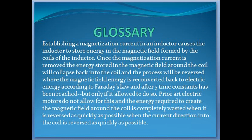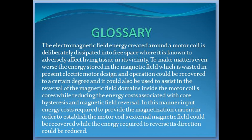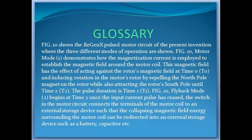Prior art electric motors do not allow for this, and the energy required to create the magnetic field around the coil is completely wasted when the current direction is reversed as quickly as possible. The electromagnetic field energy created around a motor coil is deliberately dissipated into free space, where it is known to adversely affect living tissue in its vicinity. To make matters even worse, the energy stored in the magnetic field which is wasted in present electric motor design and operation could be recovered to a certain degree, and it could also be used to assist in the reversal of the magnetic field domains inside the motor coil's cores while reducing the energy costs associated with core hysteresis and magnetic field reversal. In this manner, input energy costs required to provide the magnetization current could be recovered while the energy required to reverse its direction could be reduced.